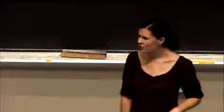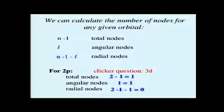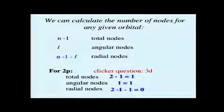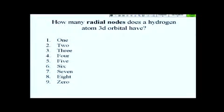Let's have you try one more, if we can switch over and talk about a 3d orbital. So I'm asking very specifically about radial nodes here. How many radial nodes does a hydrogen atom 3d orbital have? You can go ahead and take ten seconds on that.